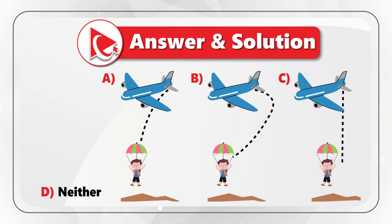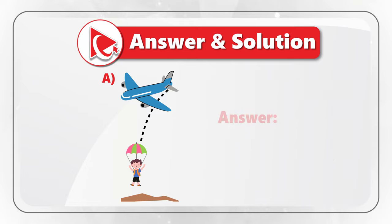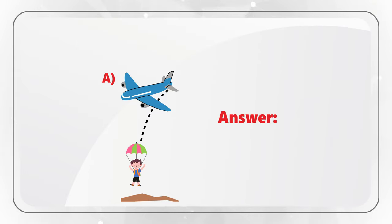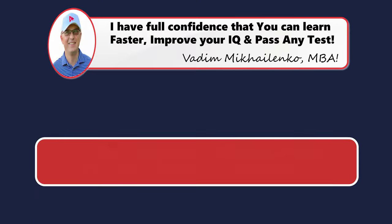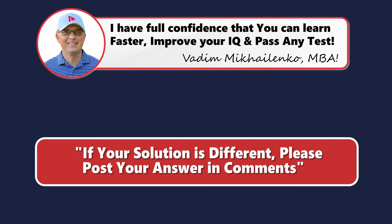The closest answer that describes this trajectory is Choice A. Is this what you got? If not, please post your solution and rationale in comments so we can all learn.